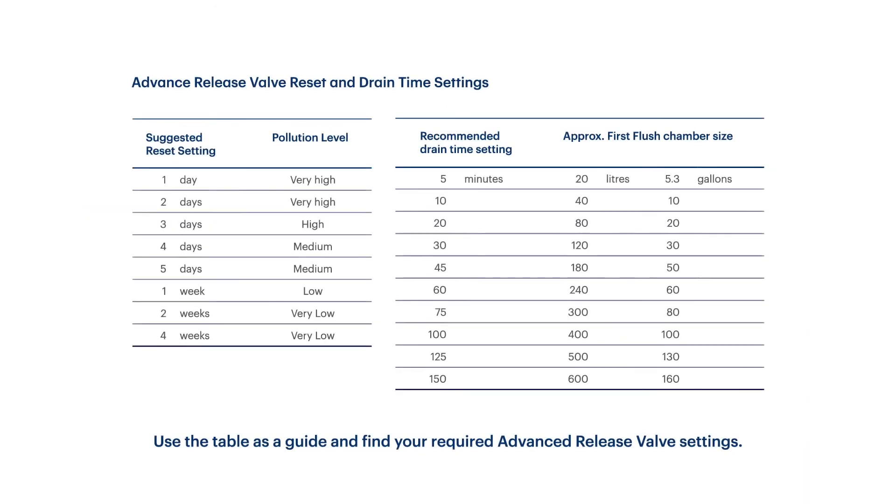Adjust your valve by using the advanced release valve reset and drain time setting table as a guide. You can find this here or on our website in the downloadable version of our installation and specification guide. Consider your pollution level to adjust your reset setting and your first flush chamber's volume to adjust your drain time setting.